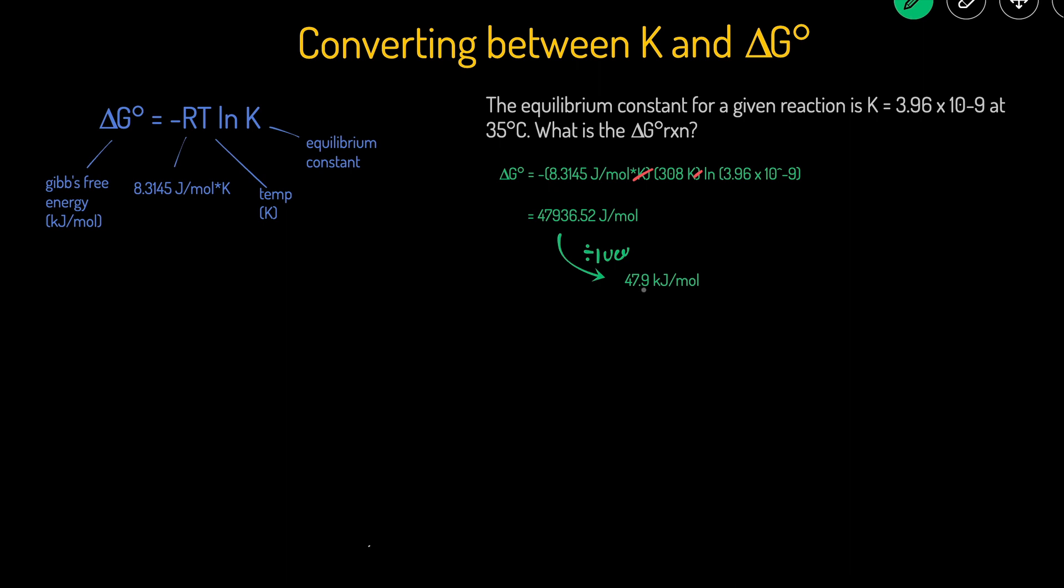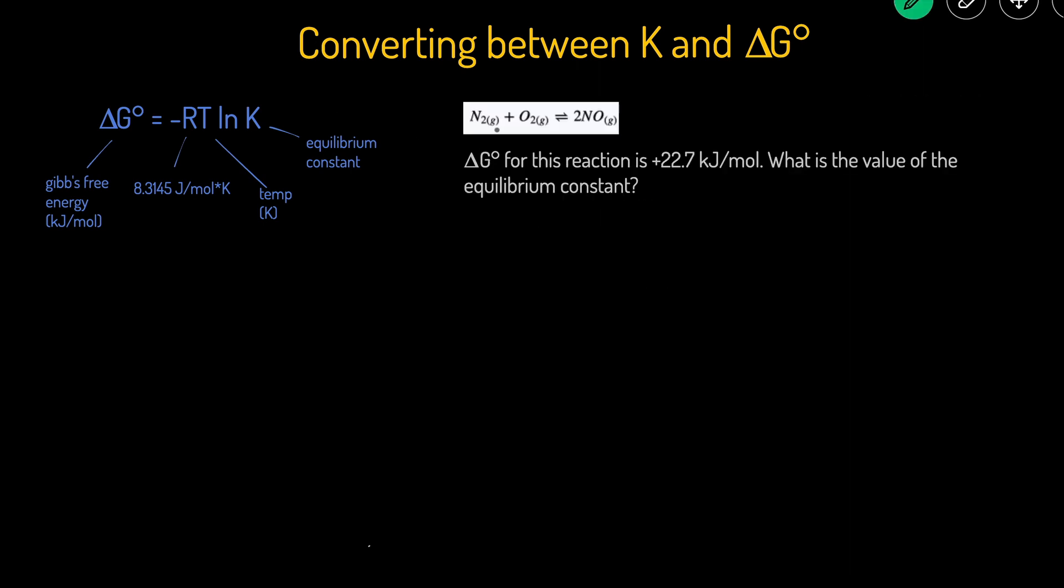Now let's look at a problem where we go in the opposite direction—given ΔG°, solve for K. In this problem, the standard ΔG° for this reaction is 22.7 kJ/mol. What's the value of the equilibrium constant?